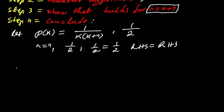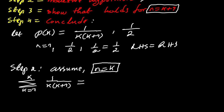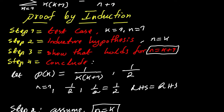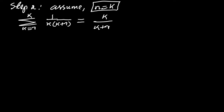Since it's true, we go to the next step. For step two, we assume it is true for n equal to k, meaning we are summing from k equal to one to k of one over k times k plus one. This will be equivalent to — wherever we see n we replace it with k — giving us k over k plus one. That's all about the second step.